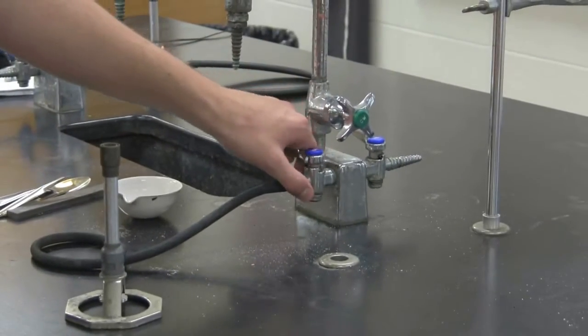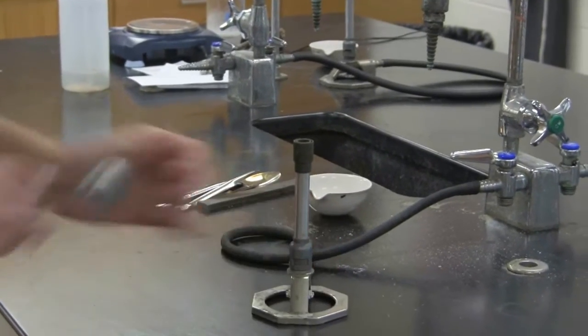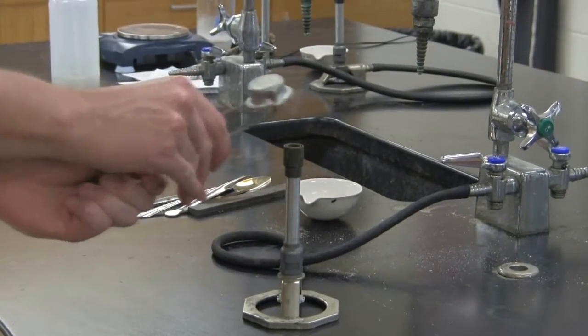Turn the gas on by making the handle parallel to the cord. Make sure the Bunsen burner's cables and top are open for fires.